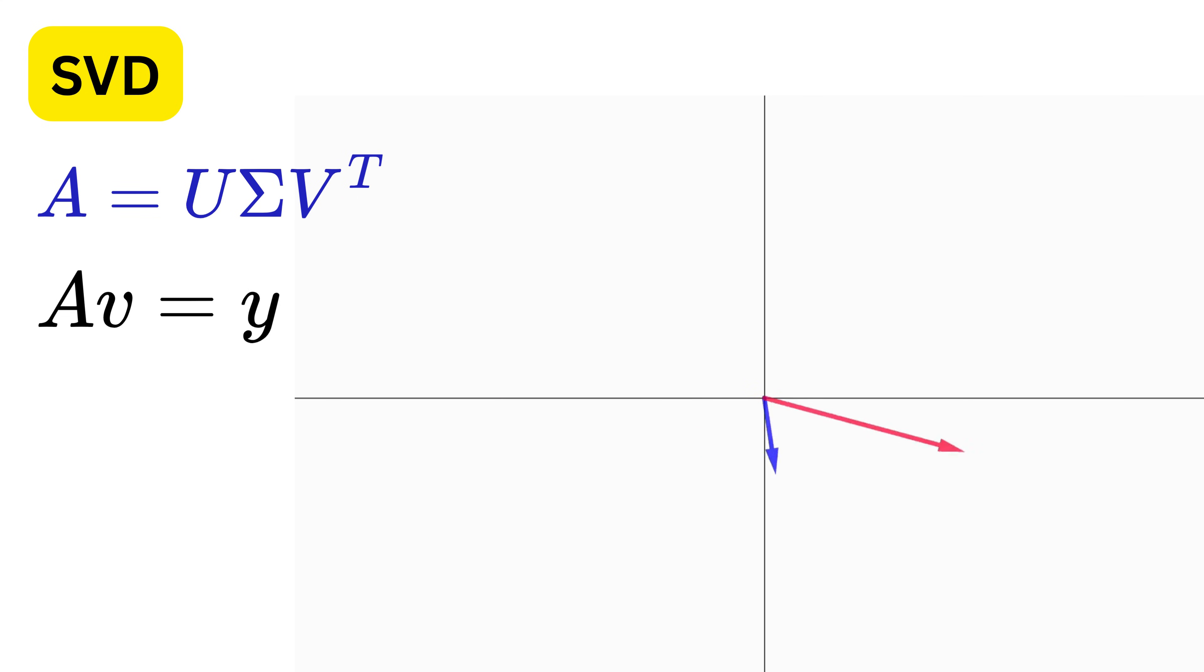Sometimes it becomes small, sometimes it becomes large, and at one special orientation it reaches its maximum value. This exact direction of V, where Y becomes the longest, is what SVD gives us directly.